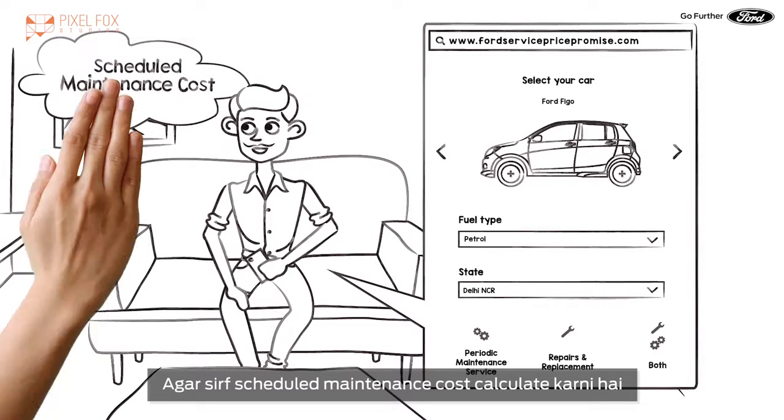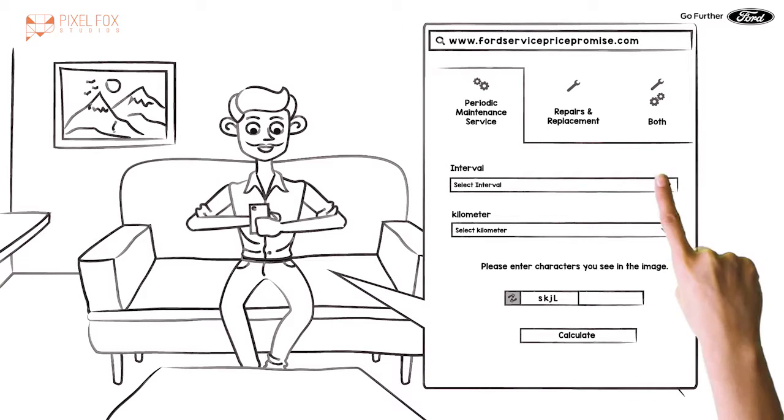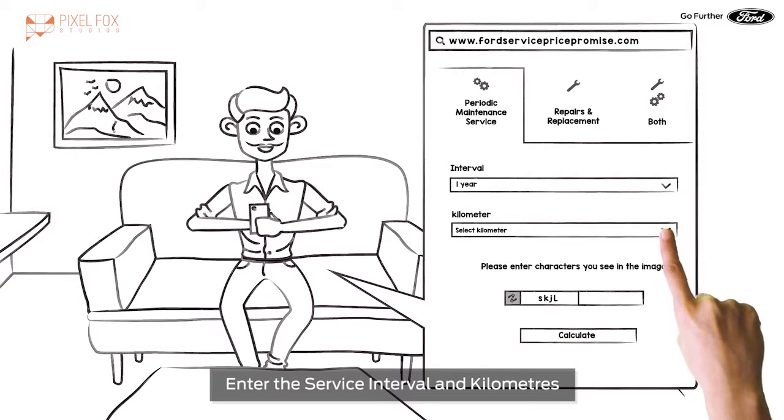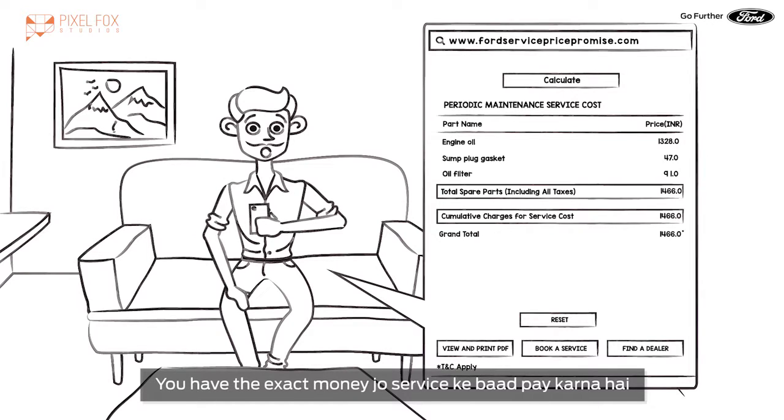Agar sirf scheduled maintenance cost calculate karani hai, to select the periodic maintenance service tab. Enter the service interval in kilometers. Click on calculate and boom! You have the exact money jo service ke baad pay karna hai.